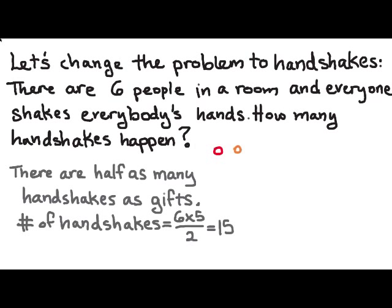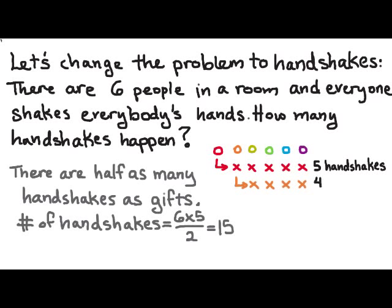If we want to do the problem the long way, we can imagine all six people in a line and you're the red person and you go and shake everybody's hands. That's five handshakes, but you don't get back in line because you don't need to shake anybody's hand again. And then the orange person shakes four hands, the yellow shakes three, the green shakes two, and the blue person shakes one. And if we add all those numbers up, we get 15, which is the same answer that we got when we did the problem the short way.